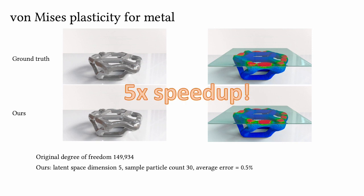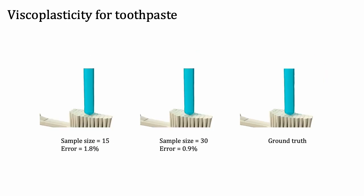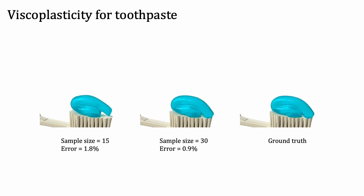Due to the reduced scale of MPM time stepping, the overall runtime is accelerated by 5 times. We simulate a ribbon of toothpaste smeared onto a toothbrush held at different angles, with latent space dimension 6. Sampling 50 particles yields an average error of 0.6%. The sample size can be further reduced without too much discount on visual quality — sampling 30 particles yields an error of 0.9%, and results are almost indistinguishable from the ground truth.